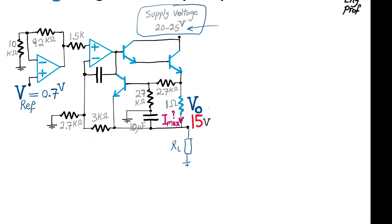So it's going to apply a fixed 15 volts at the load, and as a result it's going to source current up to a maximum value to that load. The question is: what is the maximum current that is supplied by this regulated voltage supply at 15 volts, and what happens if the output is shorted?